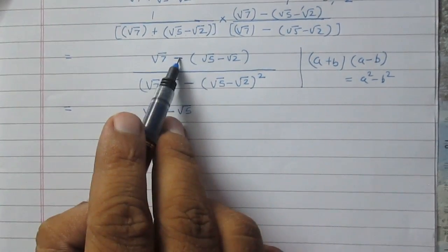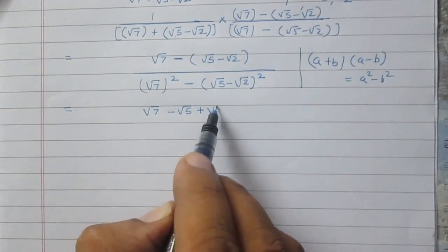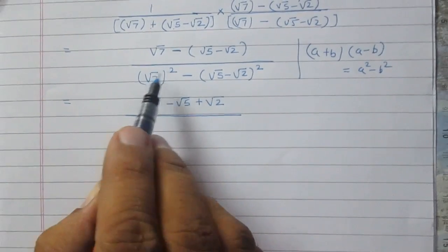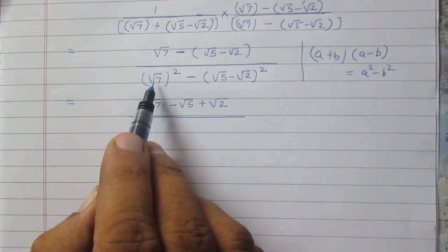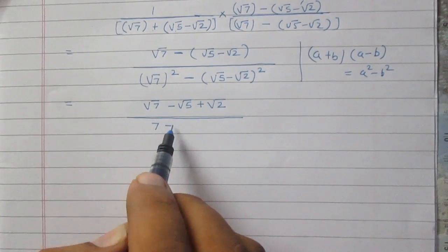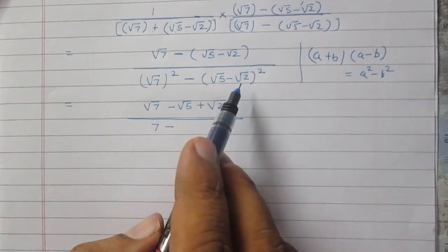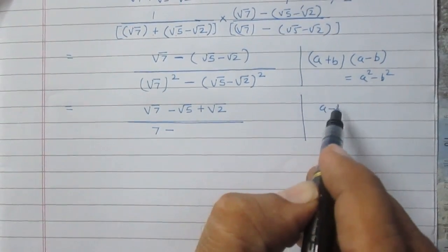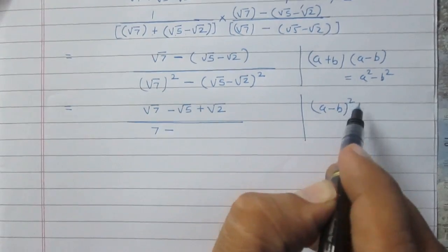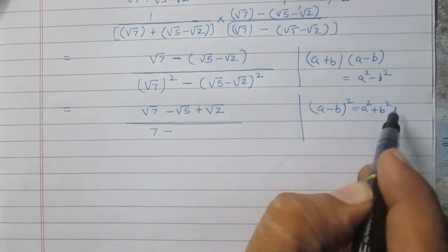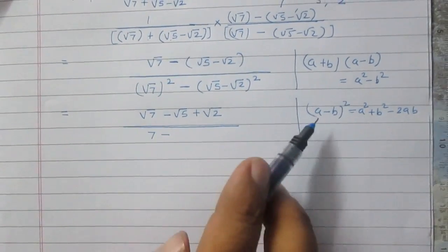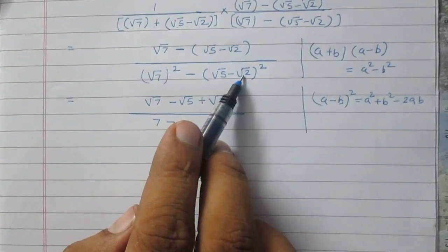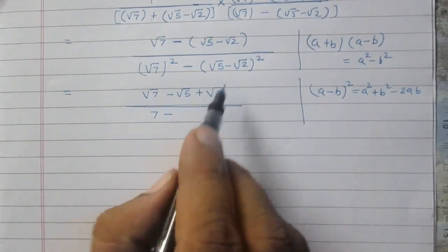The numerator simplifies to square root 7 minus square root 5 plus square root 2, since negative times negative is positive. In the denominator, square of square root 7 is 7, then minus (square root 5 minus square root 2) whole squared. We can use the identity (a - b)² = a² + b² - 2ab, where a = √5 and b = √2.